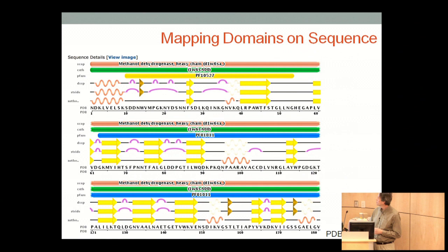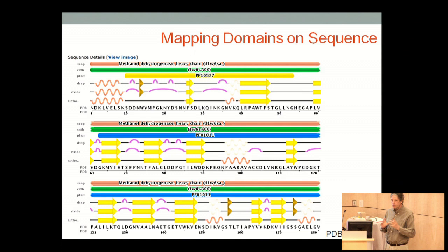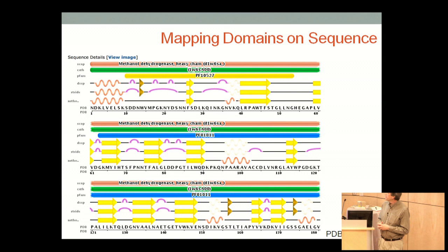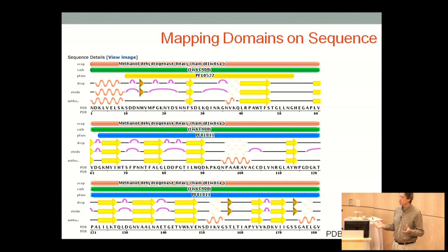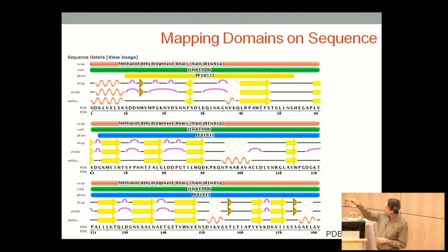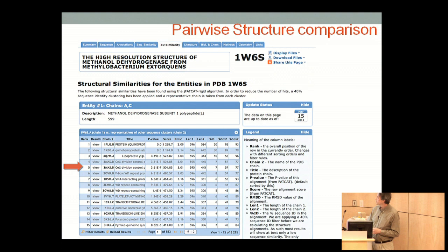Another way to depict domain and fold information is to map it on the sequence. This is similar to the multi-track display of properties in a genome browser. Here we've mapped SCOP and CATH domains along with PFAM — a sequence domain widely used in the structural field. DSSP and STRIDE are two different tools used to annotate secondary structure, and the authors' vetted secondary structure assignments are also provided, giving a little cartoon representation that maps the vocabulary of secondary structure elements onto the classification scheme.